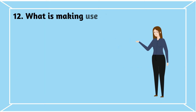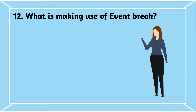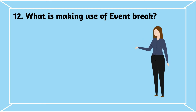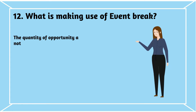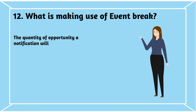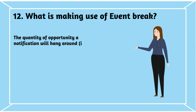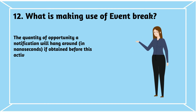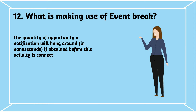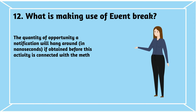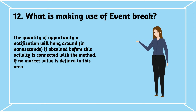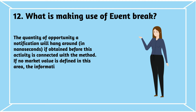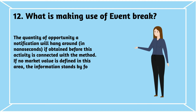Question 12: What is the use of event break? The quantity of time a notification will wait, in nanoseconds, if obtained before this activity is connected with the method. If no value is defined in this area, the information waits forever.